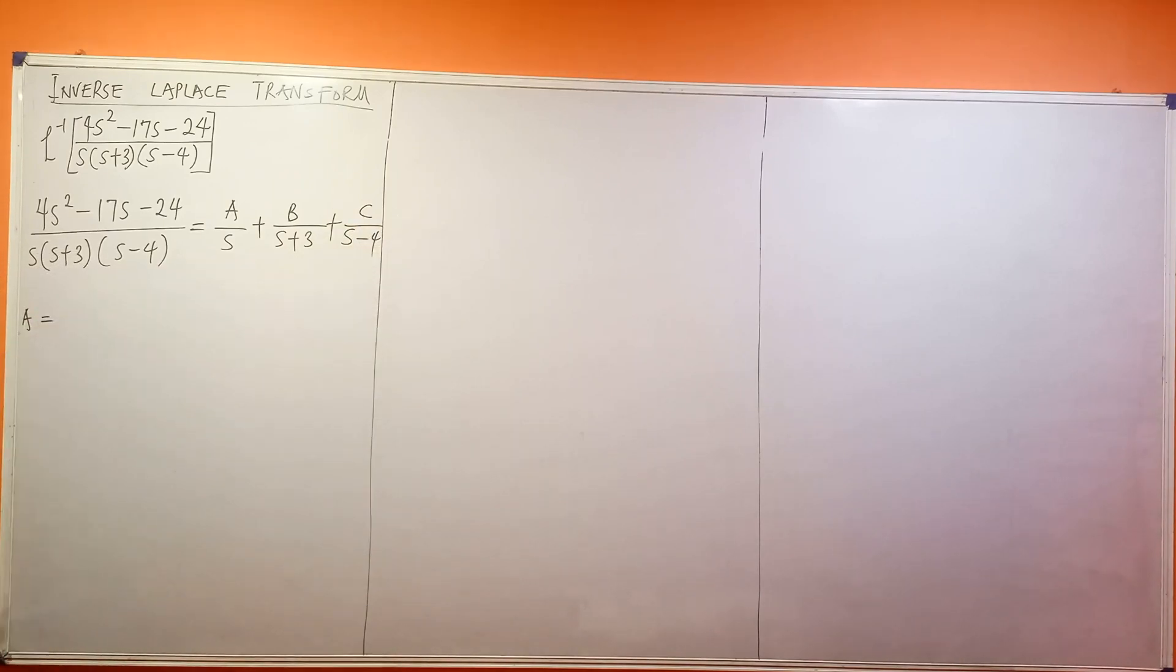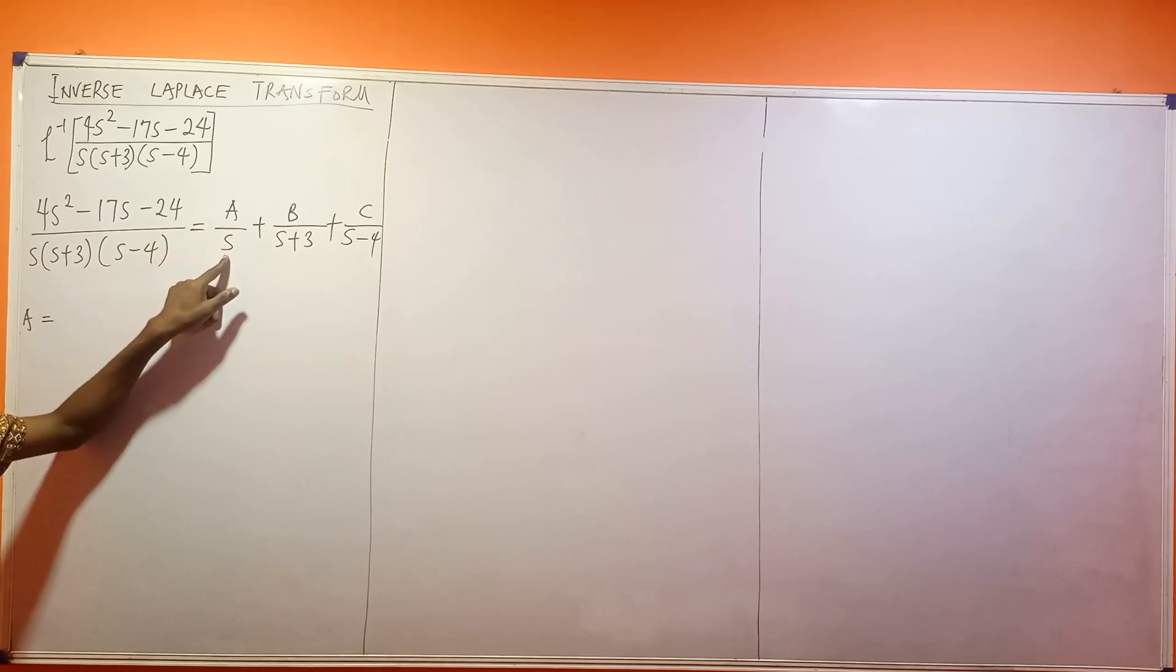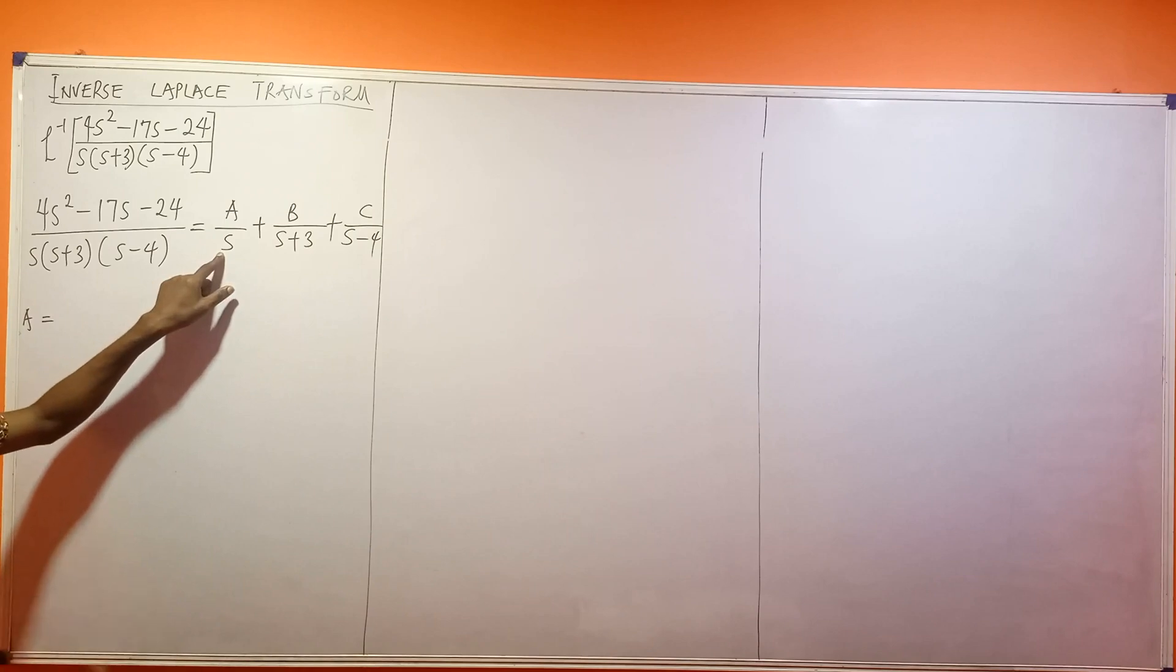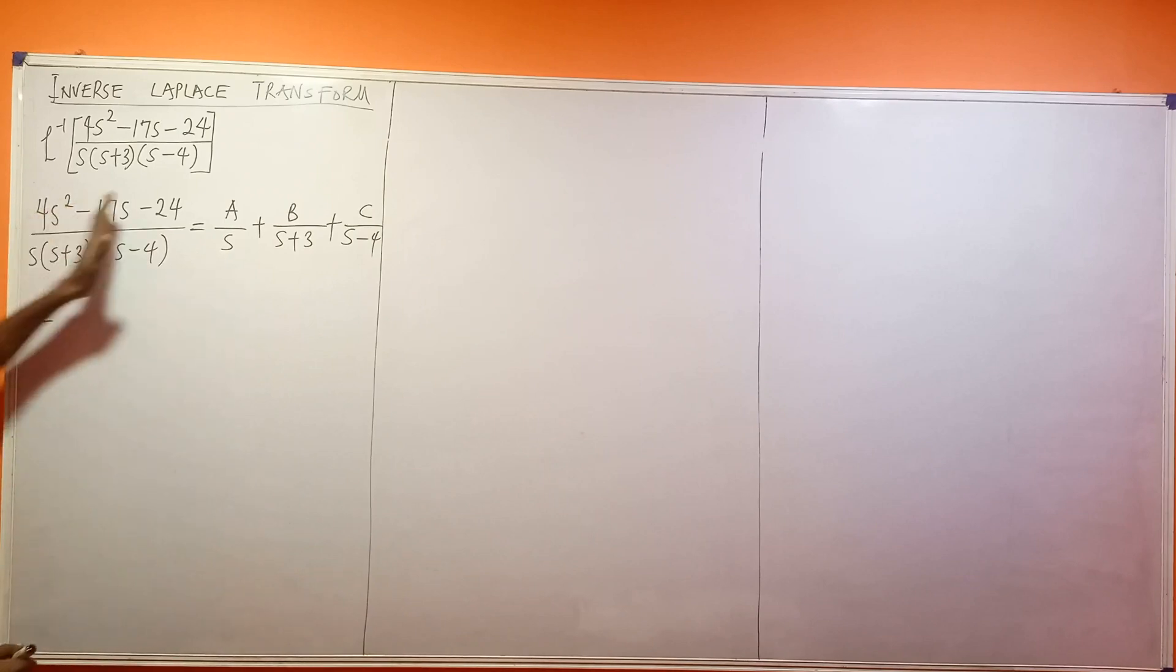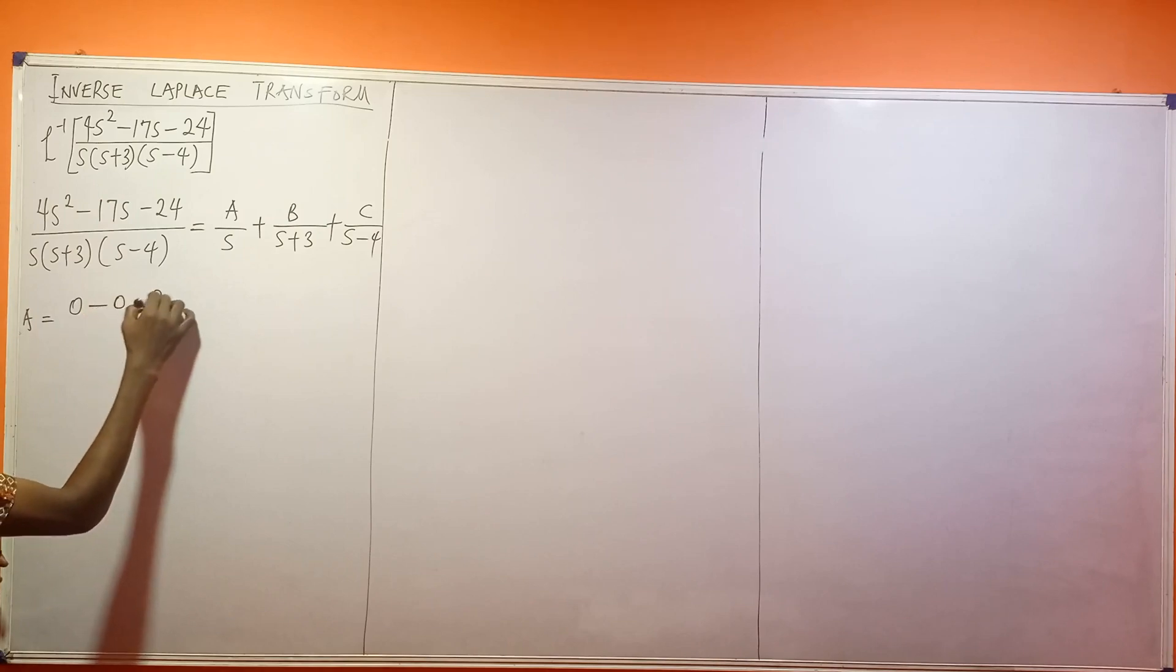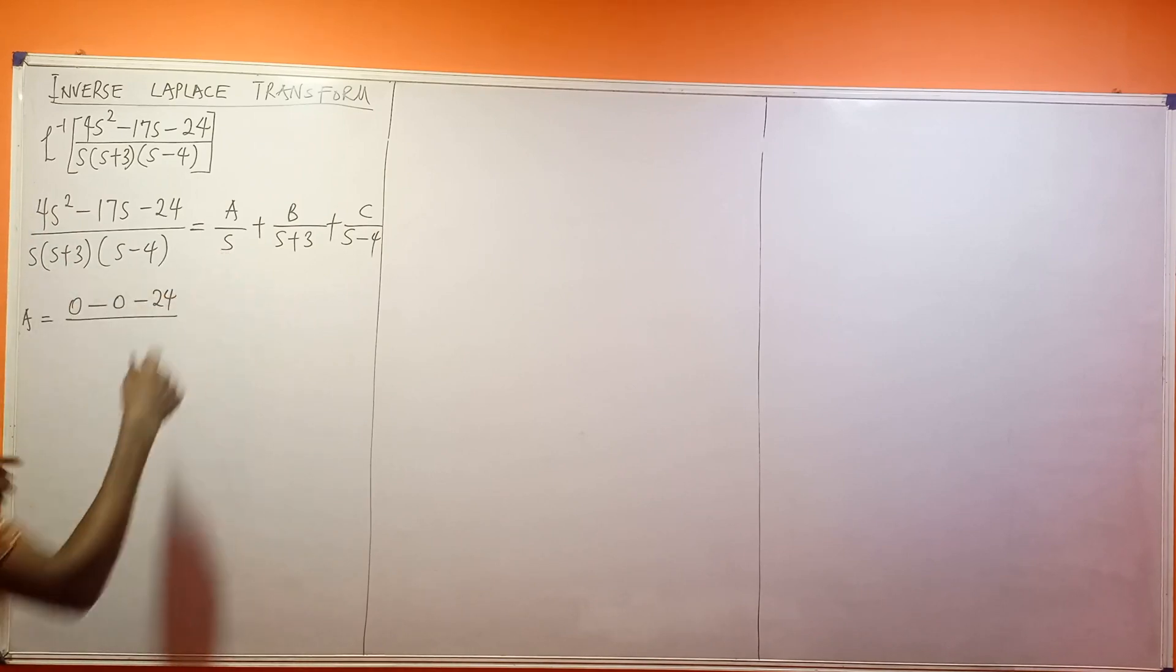Let me find my A first. I think I will use a calculator because these numbers are big. What's at the bottom of A? We have s. So we have to say s is equal to 0. That's the cover-up rule. You can watch the video over there if you have not yet watched it. We're going to cover up the s that we use to make our substitution.